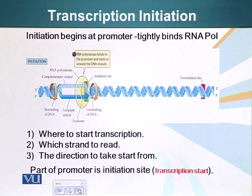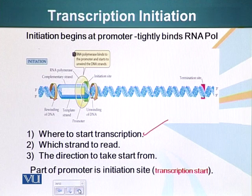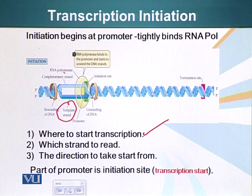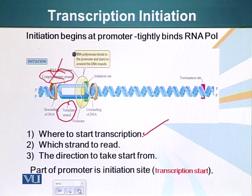The promoter tells the RNA polymerase where to start transcription — where to start reading from, where to start manufacturing RNA from. It also tells RNA polymerase which DNA strand to read. As you know, DNA is a double helix with two strands. One of them, the template strand, is used to make RNA, and the strand complementary to the template strand is not used — we call it the non-template strand.